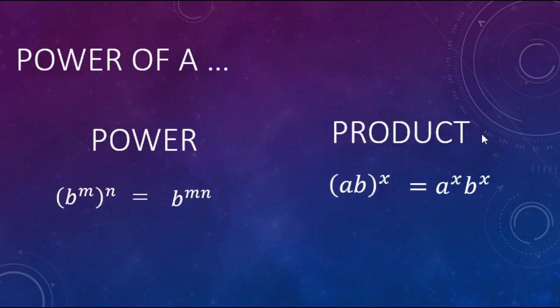So for power of a power, b to the m to the n — we multiply the exponents. And when we have power of a product, the exponent goes to both factors in the base. Hope this helps, and have a nice day — or evening, whatever time you might be watching this.